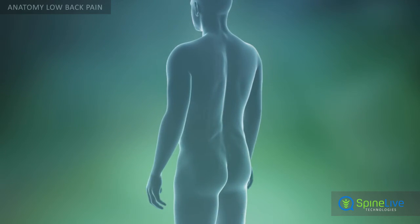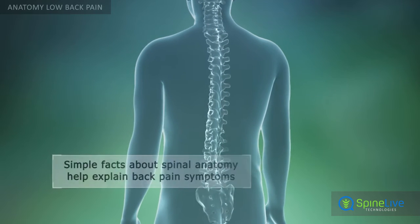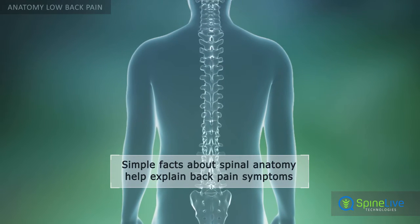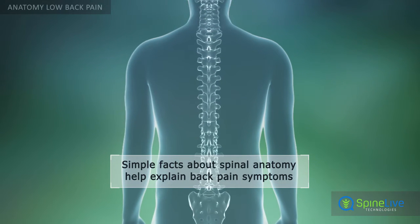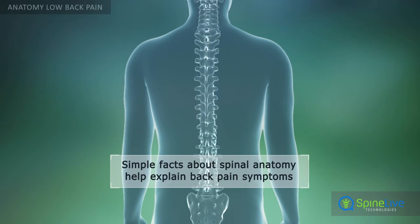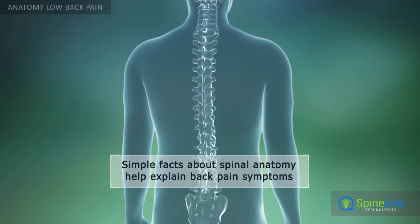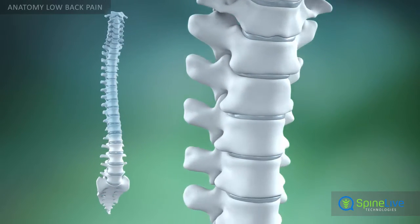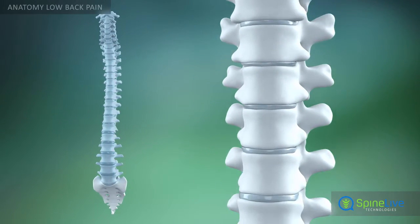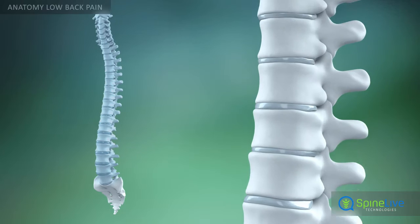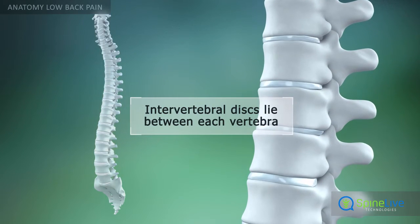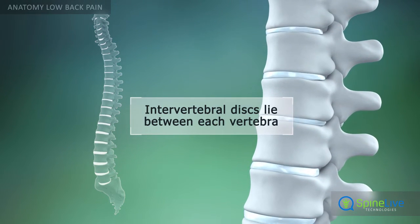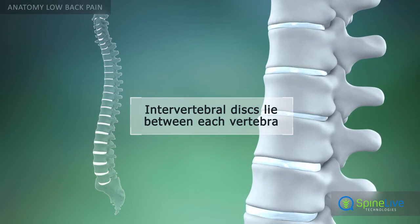In order to understand why low back pain symptoms occur, it's helpful to know the basic anatomy of the spine. The spine is made up of 33 individual bones called vertebrae. The vertebrae are numbered and divided into four regions.